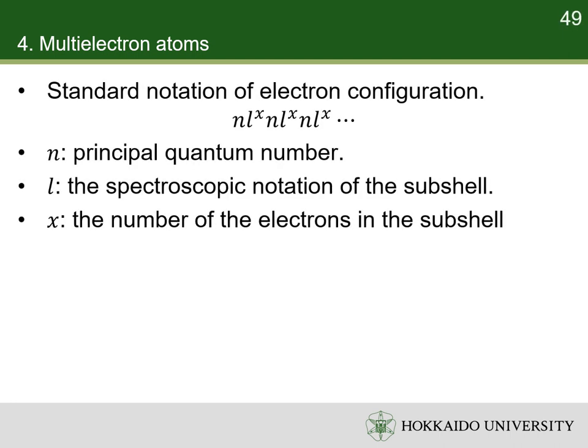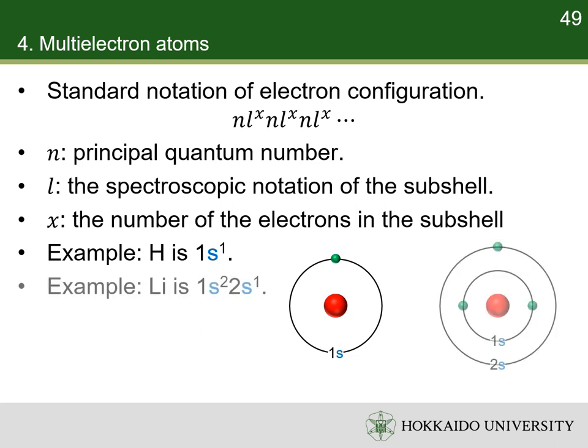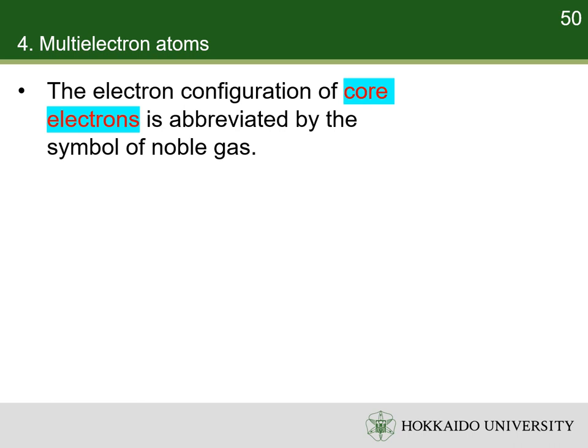The standard notation of the electron configurations of ground state atoms consists of a sequence of subshell labels with the number of electrons assigned to each subshell placed as a superscript. For example, hydrogen has one electron in the 1s subshell, so its electron configuration is written as 1s¹. Lithium has two electrons in the 1s subshell and one electron in the 2s subshell, so its electron configuration is written as 1s²2s¹. The electron configuration of aluminium, atomic number 13, is written as 1s²2s²2p⁶3s²3p¹. For some atoms, a part of the electron configuration is the same as a noble gas. These electrons are called the core electrons, whose configuration can be abbreviated with the chemical symbol of the noble gas.